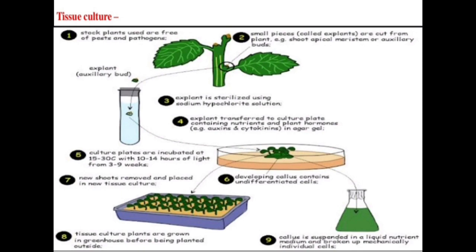Mostly, native varieties are developed using the tissue culture method. So the three methods of vegetative reproduction are cutting, grafting, and tissue culture. Thank you.